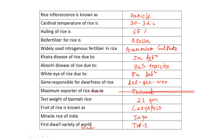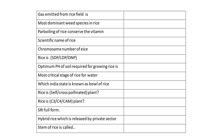The first dwarf variety of rice in the world is TN1, developed from Taiwan. Browning of rice is due to iron toxicity. The gas emitted from the rice field is methane. The most dominant weed species in rice is Echinochloa.